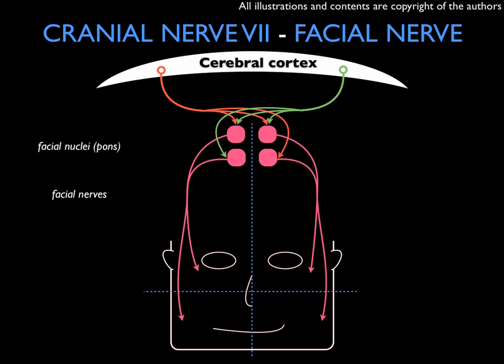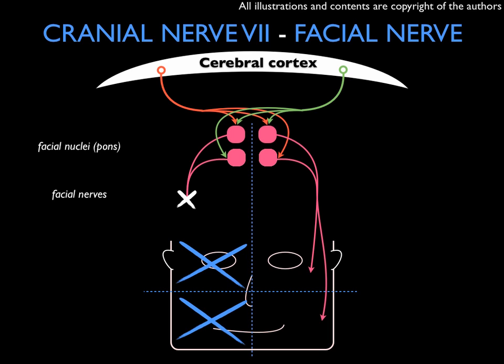Going back to the physiology, now we will see what happens if we have a lower motoneuron lesion. In this case, we are supposing there is a lesion on the facial nerve, as can be Bell's palsy. If we have a lesion on the facial nerve, we will have a lack of innervation of an entire half of the face. The motor symptoms will then be distributed in the whole upper and inferior half of the face, in two quarters. With this understanding of the functional neuroanatomy of cranial nerve 7, we can differentiate between upper motoneuron lesion and lower motoneuron lesion when these pathological processes involve the motor innervation to the face. Thanks!